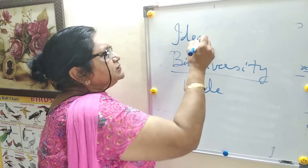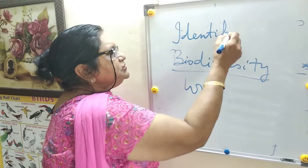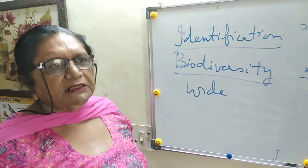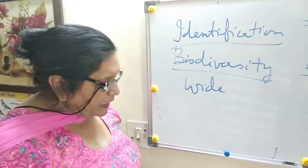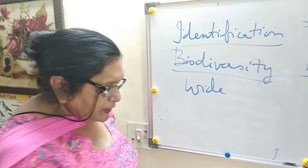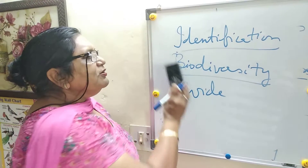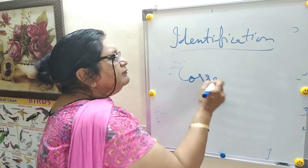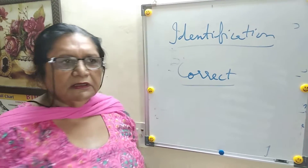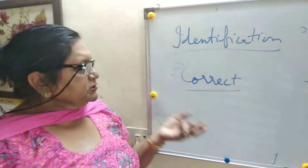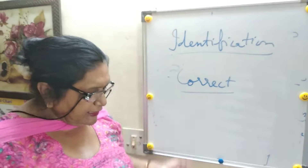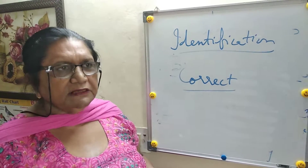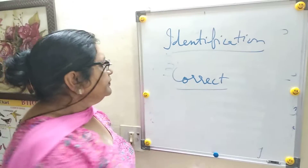According to NCRT, this chapter contains only definitions. The next definition is identification, which means to identify an organism correctly — that is, which class, which phylum, which group it belongs to, and its place, habitat, and habit. That is called identification.